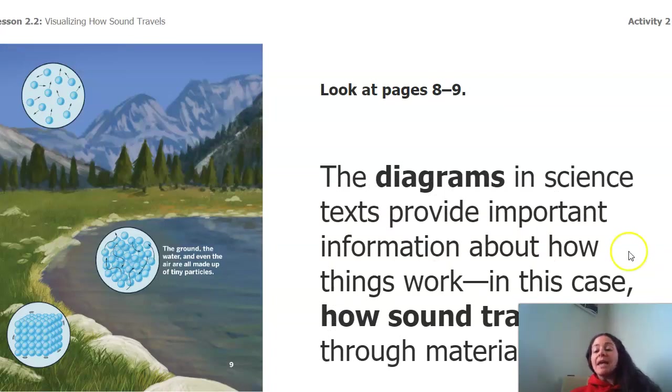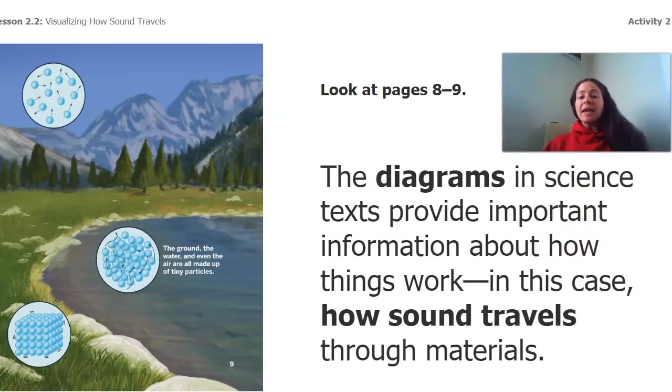So we're going to be looking at pages eight and nine. On pages eight and nine, there is a diagram to help us. And so diagrams in science help us provide, help us get important information about how things work. And in this example, it's how sound travels through materials.